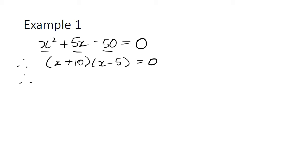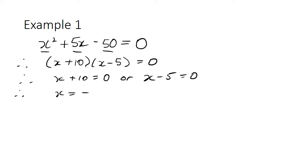Then we use the null factor law: therefore x plus 10 equals 0, or x minus 5 equals 0. Solving both of those: therefore x is equal to minus 10 — remember the inverse of adding 10 is to subtract 10 — or x is equal to 5. Okay, that's the first simple example done.